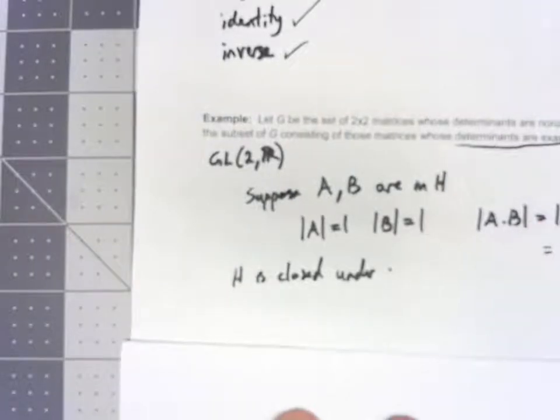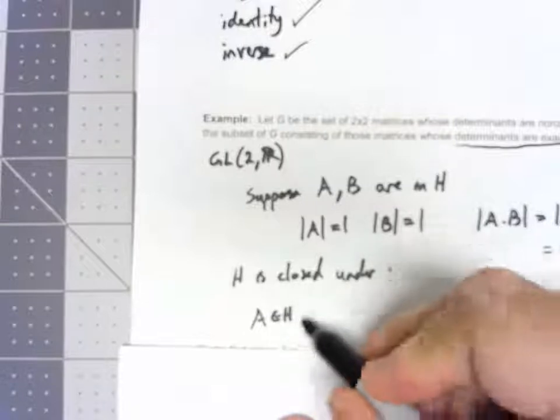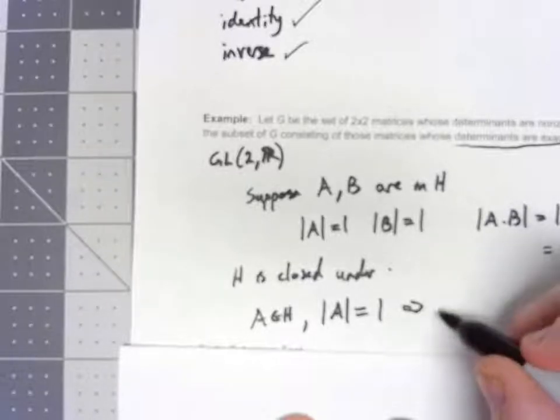What about inverses? Well, it's actually very similar. Suppose A is in H. That means the determinant of A is 1. Because the determinant is not zero, it does have an inverse. And another property of determinants is that the magnitude of A inverse is 1 over the determinant of A. Well, that's 1 over 1 is 1. So, if A has determinant 1, so does A inverse. That means that if A is in H, A inverse is in H.